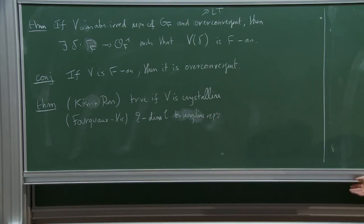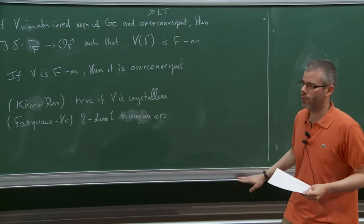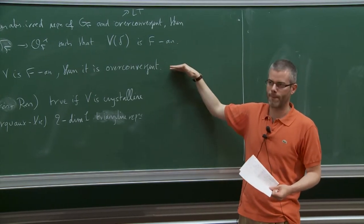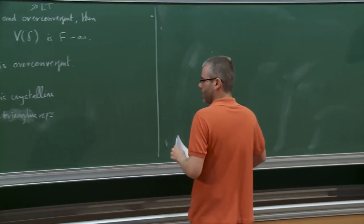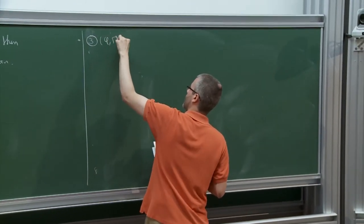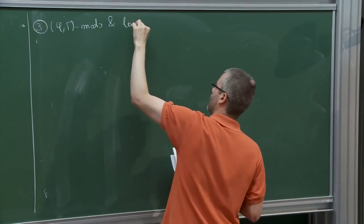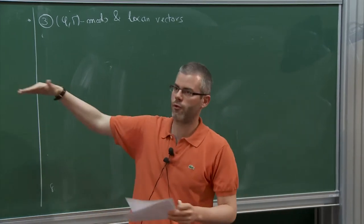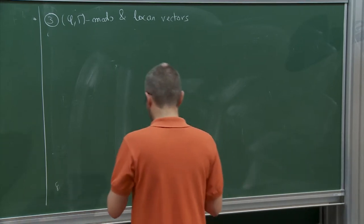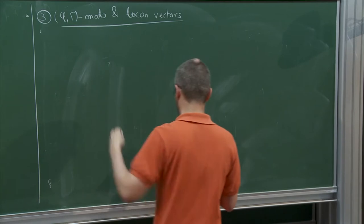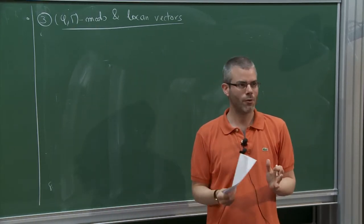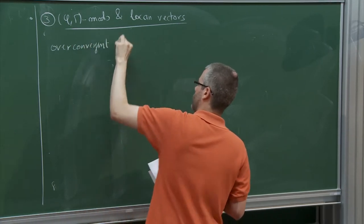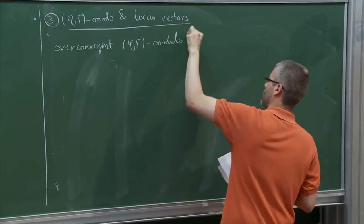What I'd like to do now is to tell you about phi-gamma modules and their relationship with locally analytic vectors, and explain why I think this provides evidence for the conjecture. Let me say a few things about classical overconvergent phi-gamma modules in the cyclotomic case. Let I be a subinterval of [0, +∞), and I can look at the set of power series B_{F,I} — now with variable X since I'm in the cyclotomic setting — with a_i in F, converging for the norm of X equal to p^{-1/r} whenever r is in the interval I.